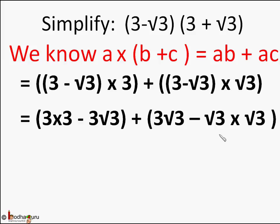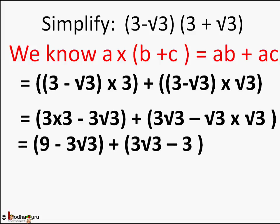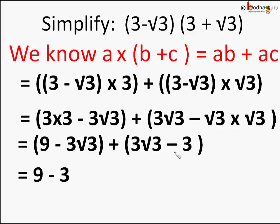Now we simplify both terms. The left term becomes 3 into 3 minus 3 square root of 3, which is 9 minus 3 square root of 3. The right term becomes square root of 3 into 3 minus square root of 3 into square root of 3. We know square root of 3 into square root of 3 is 3, so it becomes 3 square root of 3 minus 3. Combining, the 3 square root of 3 and minus 3 square root of 3 cancel each other — just like x minus x — so it becomes 9 minus 3, which is equal to 6.